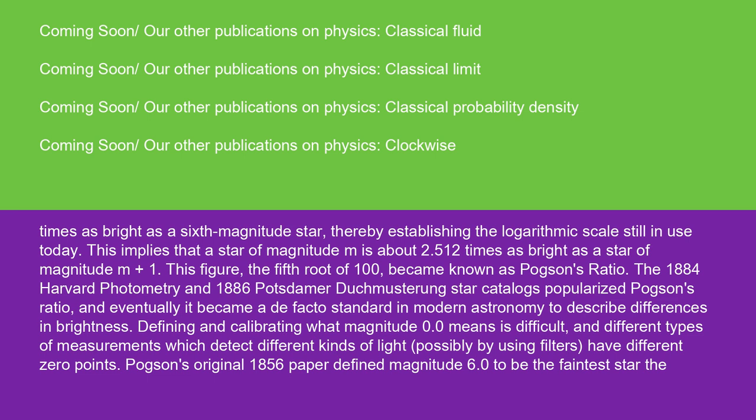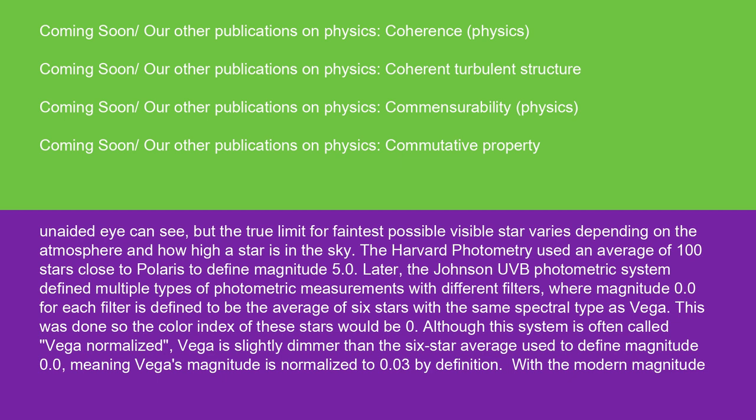Defining and calibrating what magnitude 0.0 means is difficult, and different types of measurements which detect different kinds of light, possibly by using filters, have different zero points. Pogson's original 1856 paper defined magnitude 6.0 to be the faintest star the unaided eye can see, but the true limit for faintest possible visible star varies depending on the atmosphere and how high a star is in the sky. The Harvard Photometry used an average of 100 stars close to Polaris to define magnitude 5.0. Later, the Johnson-UVB Photometric System defined multiple types of photometric measurements with different filters, where magnitude 0.0 for each filter is defined to be the average of six stars with the same spectral type as Vega. This was done so the color index of these stars would be zero. Although this system is often called Vega normalized, Vega is slightly dimmer than the six-star average used to define magnitude 0.0, meaning Vega's magnitude is normalized to 0.03 by definition.